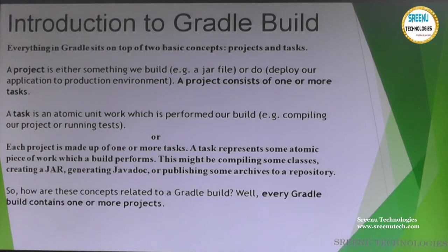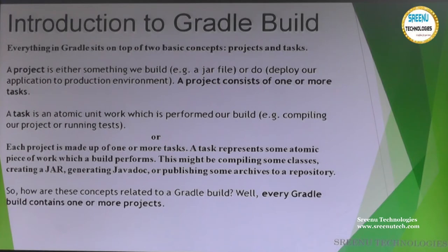For example, if you take a Java application, we can have compilation, creating a JAR, and preparing Javadocs. Like that we have different kinds of phases. Each phase is atomic — we cannot put them all into a single unit. So what they define is: a project consists of one or more tasks.